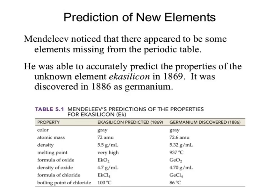He went through and looked at eka-silicon. Silicon is relatively easy to find because silica is found everywhere — silicon is all through sand. But he went through and said eka-silicon exists: it should be gray, it should be 72 AMUs, it should be 5.5 grams per milliliter, very high melting point — all those statistics. That was 1869. In 1886, they actually discovered it.